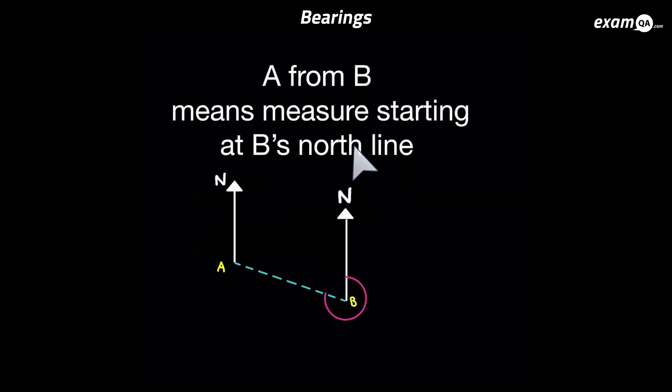Now if a question says measure the bearing A from B you must always start at B's north line and measure through until you're facing A. So A from B means from B's north line. And from that north line you keep turning until you're facing A.